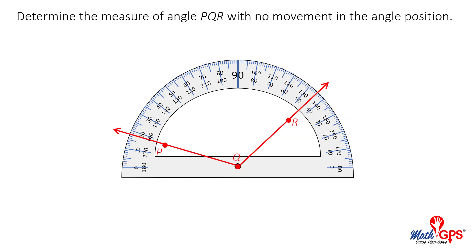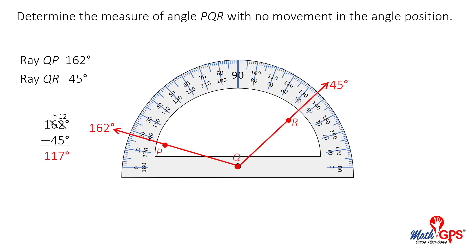Determine the measure of angle PQR with no movement in the angle position. If the tick mark values are read from zero degrees to 180 degrees in a counterclockwise direction, ray QP passes through 162 degrees and ray QR passes through 45 degrees. If we subtract, the difference is 117 degrees.